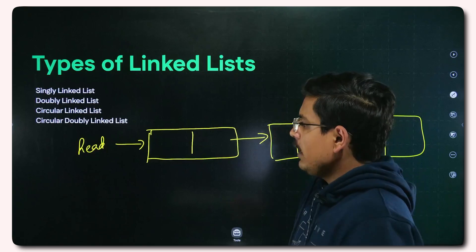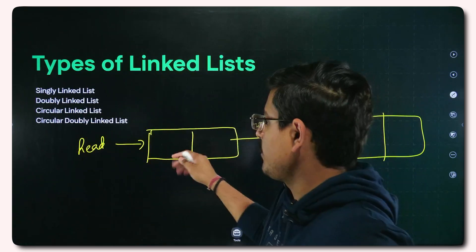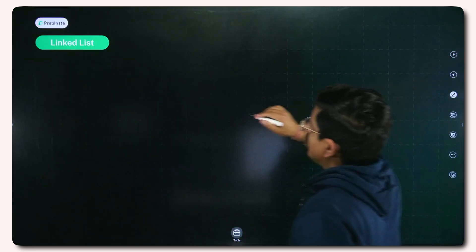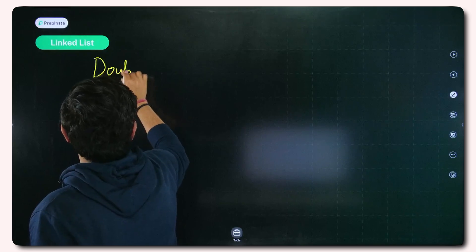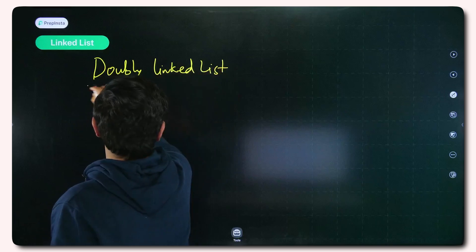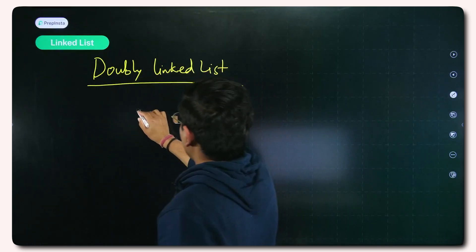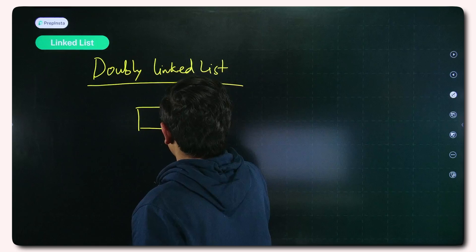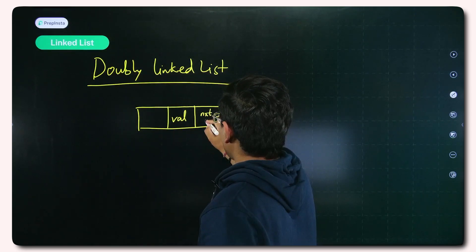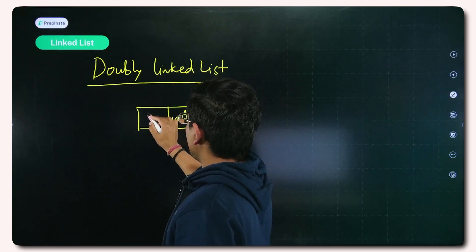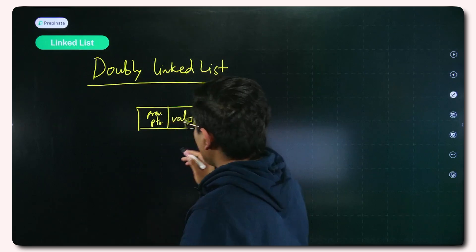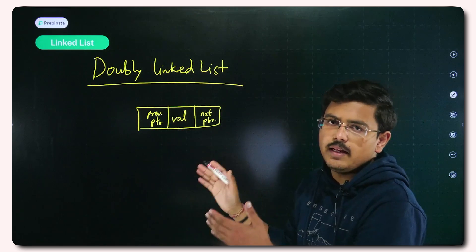If not this particular type of linked list, then what? For that, there is another linked list called a doubly linked list. In a doubly linked list, you generally have two pointers in a node — you have a value, a next pointer, and a previous pointer. This is how a node of a doubly linked list looks.